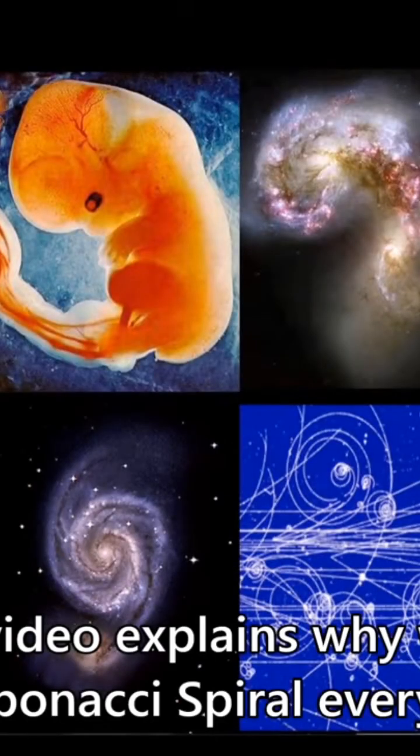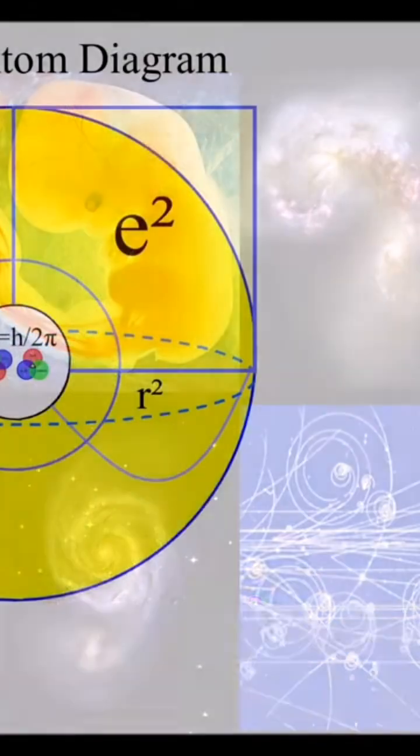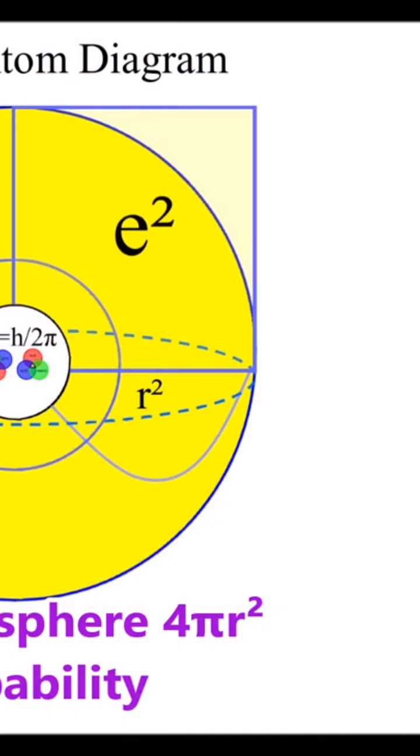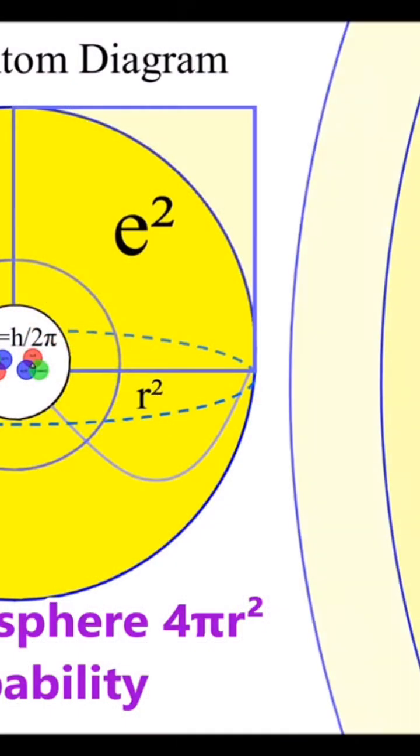The universe forms the golden ratio out of simple spherical geometry. We have an electron sphere around the nucleus of each atom.